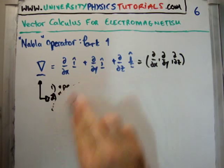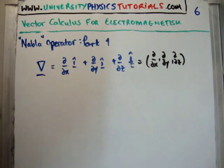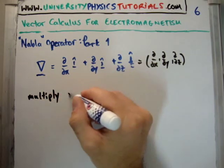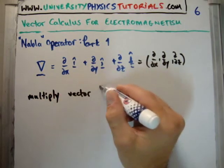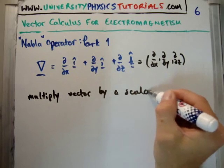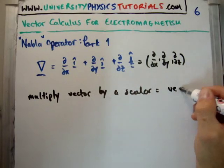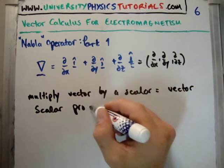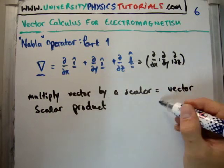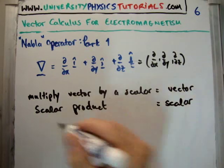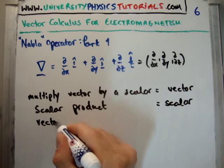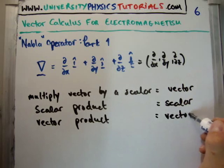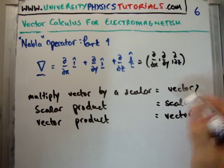So the dot product, we need to think first of all about what these things do. Well, if you multiply a vector by a scalar, you get a vector. We know that. If we take the scalar product, also known as the dot product, well of course you get back a scalar. But if you take the vector product, or the cross product, what you get back is a vector. And that's important. This is very important. In actual fact, you need to know that.